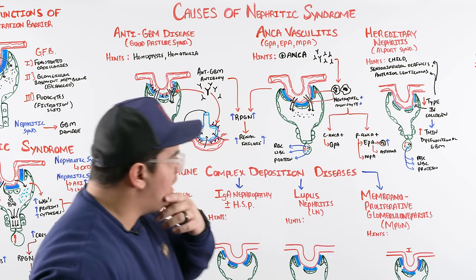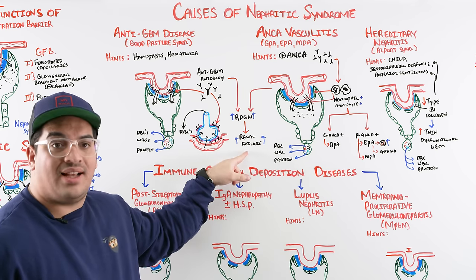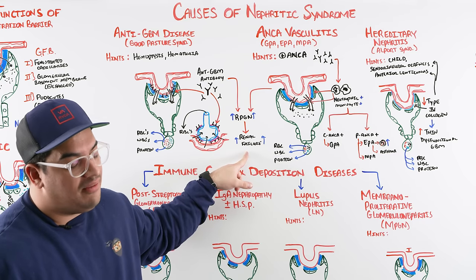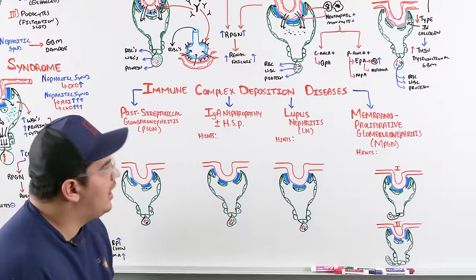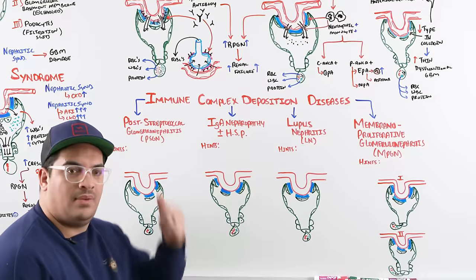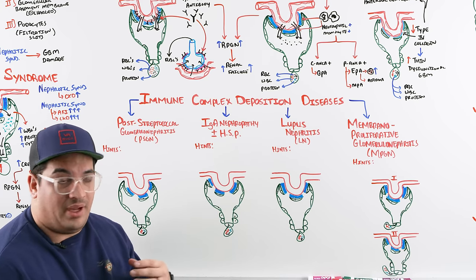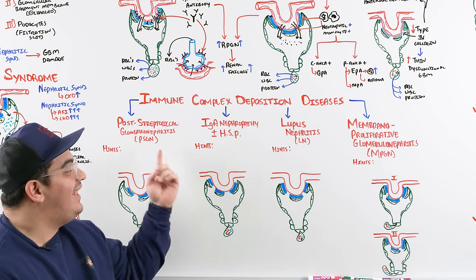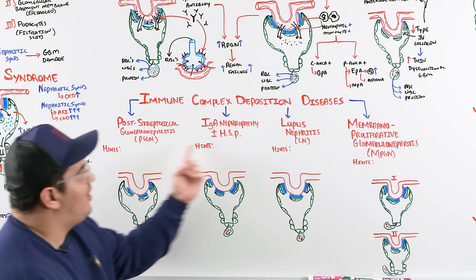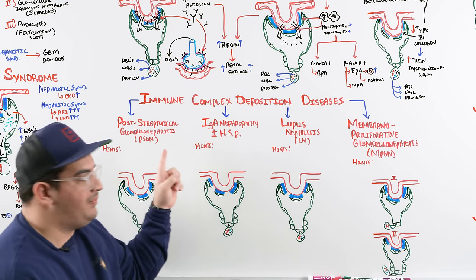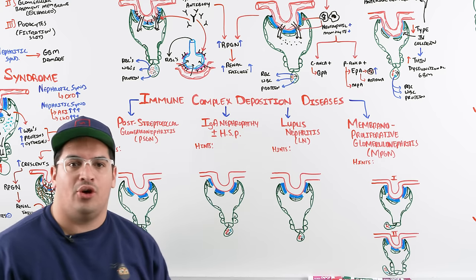So far we've covered three types of nephritic syndromes — two of them (anti-GBM and ANCA vasculitis) can cause RPGN leading to renal failure. Now we come to the immune complex deposition group. Anti-GBM involved antibody depositing into the GFB; ANCA vasculitis involved immune system cells depositing; hereditary nephritis meant you weren't making a proper GBM. Immune complex deposition means an antibody-antigen complex deposits into the GFB. The types include: post-streptococcal glomerulonephritis, IgA nephropathy (with a variant called Henoch-Schönlein Purpura), lupus nephritis, and membranoproliferative glomerulonephritis.